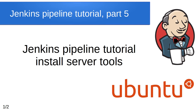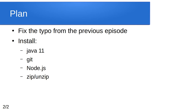Hello Internet, I am Mihai. It is the fifth episode of the Jenkins Pipeline tutorial. Let's start. In this video, we will install required software for our server. But before the installation, I want to fix one typo I made in the previous video. After I fix it, I will install Java, Git, Node.js, ZIP and ZIP tools.